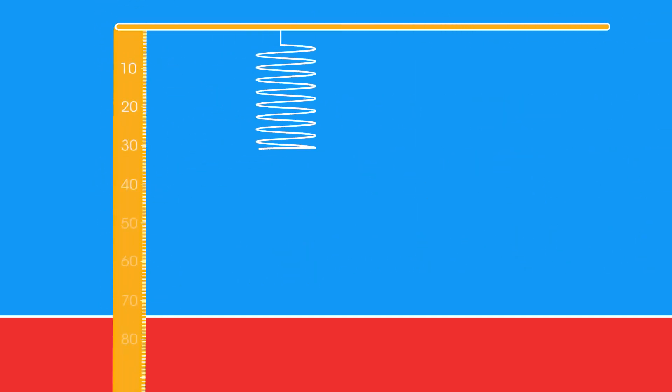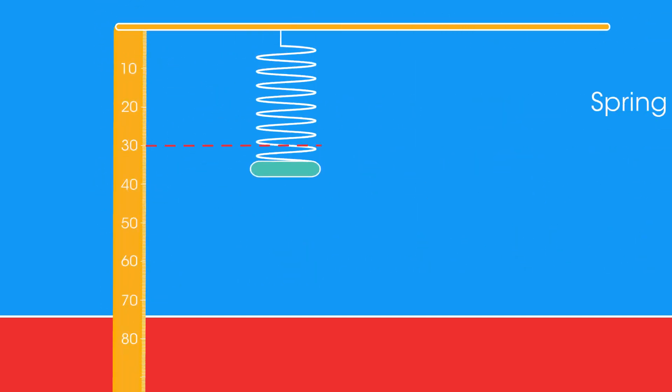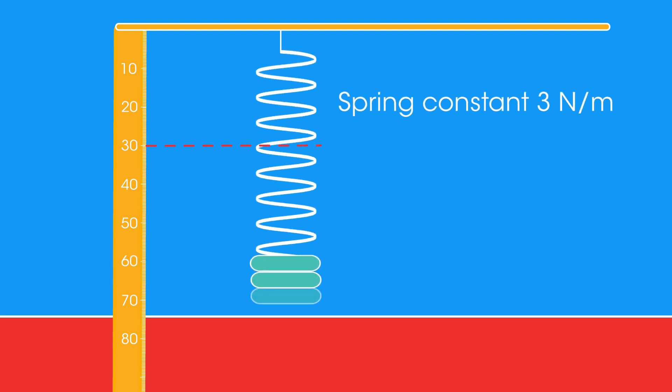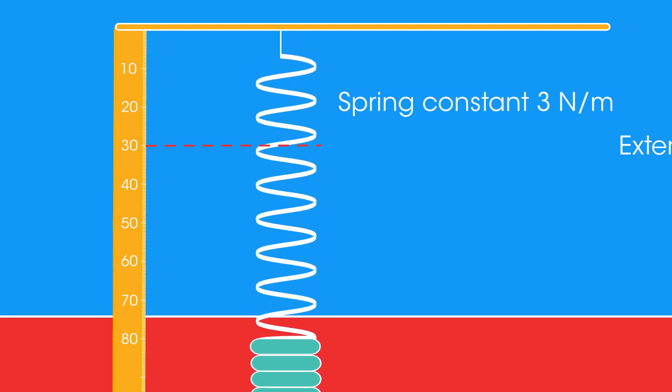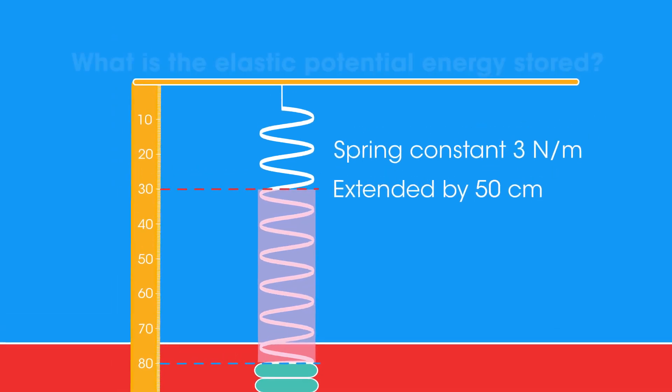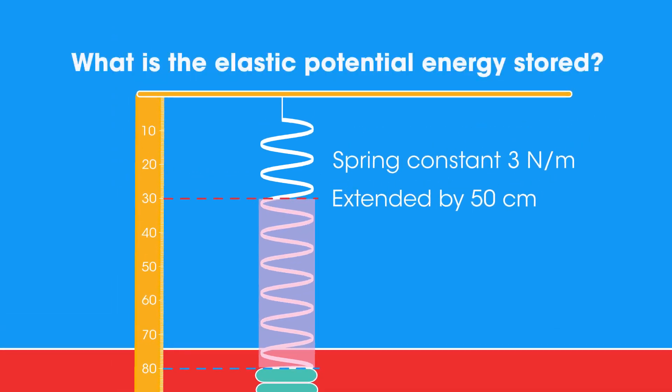Let's try applying this. A spring is stretched. It has a spring constant of 3 newtons per metre. It's extended by 50 centimetres. What is the elastic potential energy stored by the spring? Pause the video while you work it out.